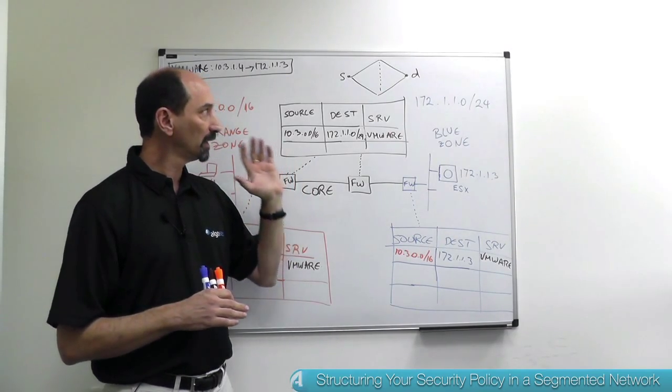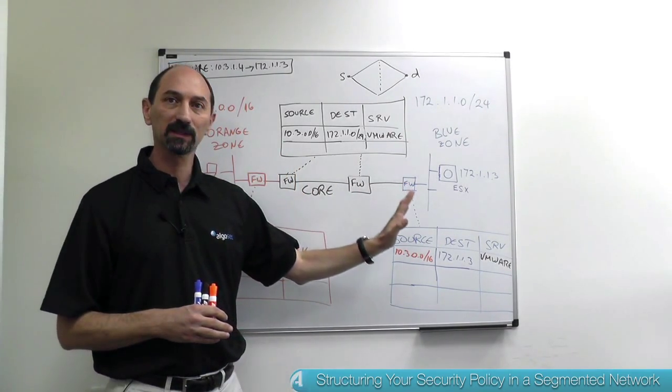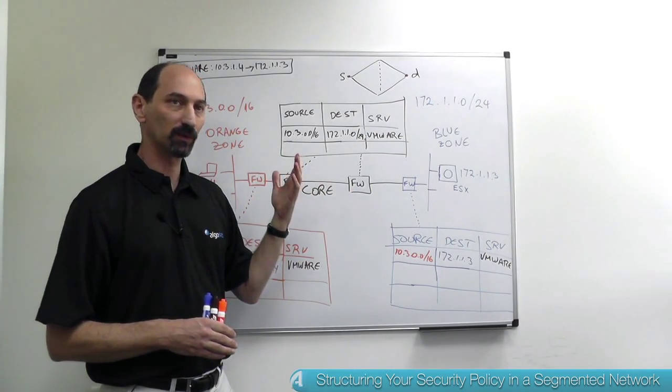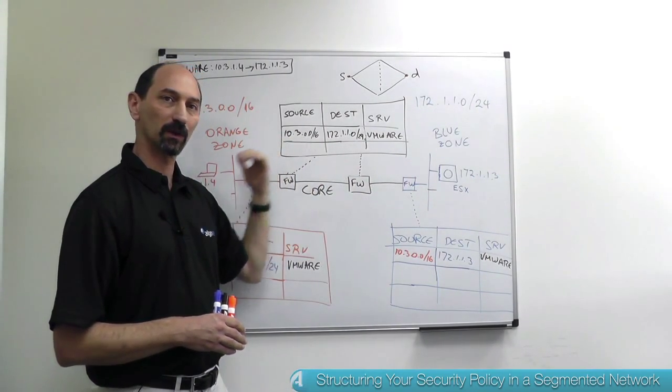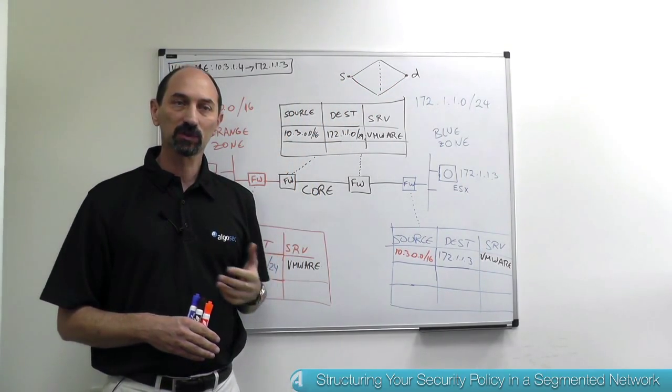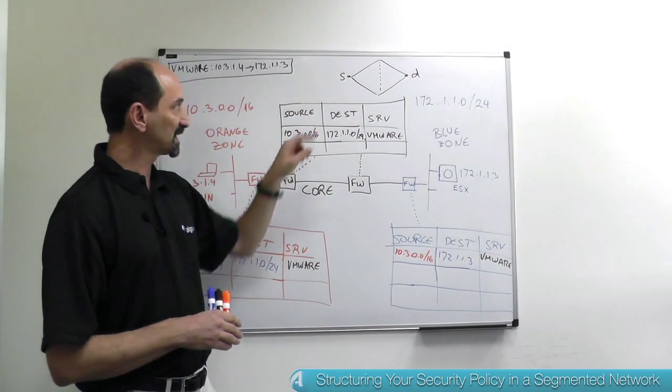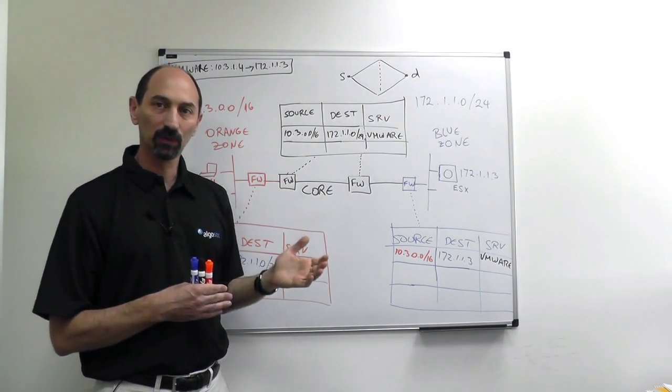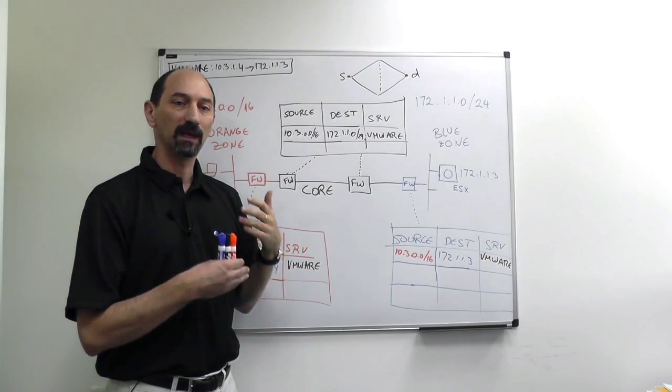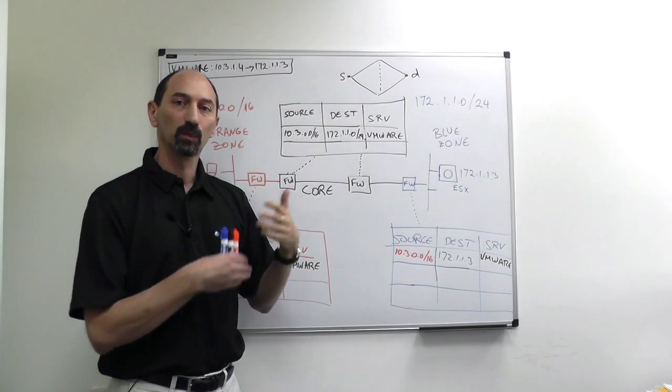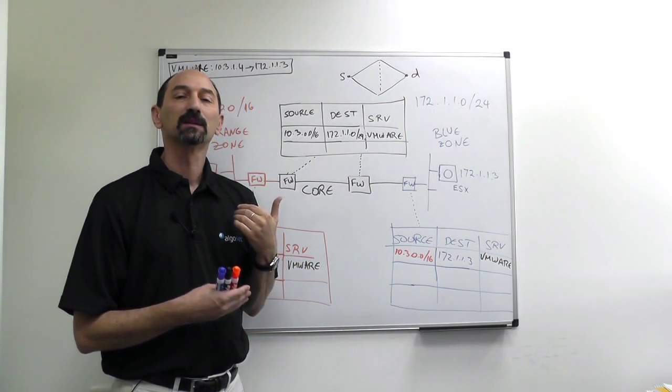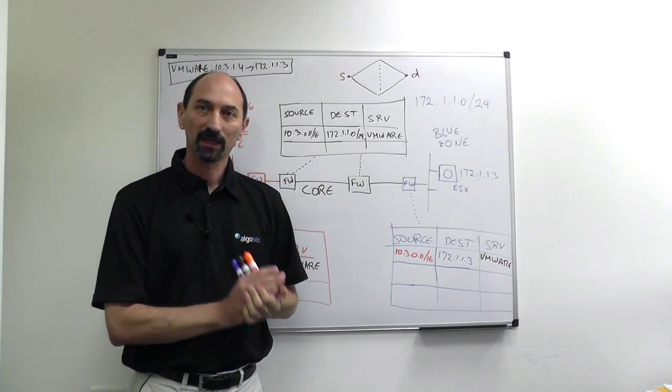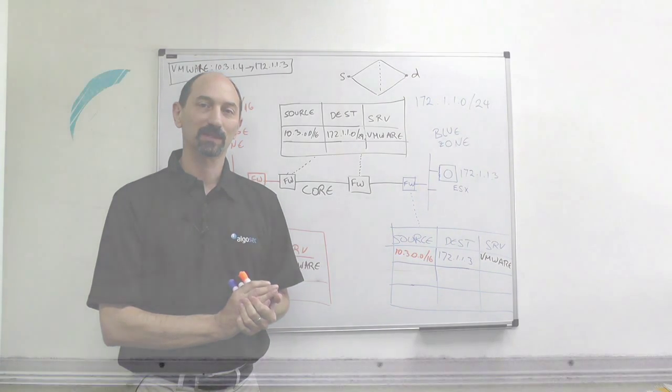So to conclude, think about in the multi-zoned segmented network with multiple firewalls, think about your firewall policies as a whole across your whole estate using this diamond-shaped metaphor where you're specific at the points and broad in the middle. If you do that you'll have a more structured policy and you'll have to work less with upcoming change requests and in general you'll be able to do more with your limited time. So thank you very much for your attention and see you next time.